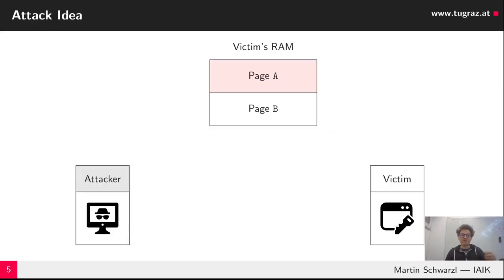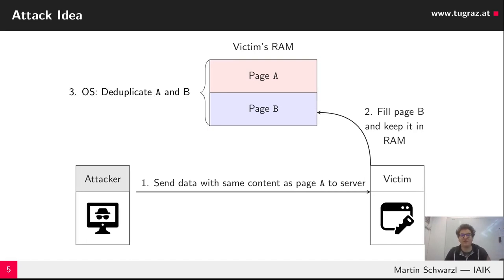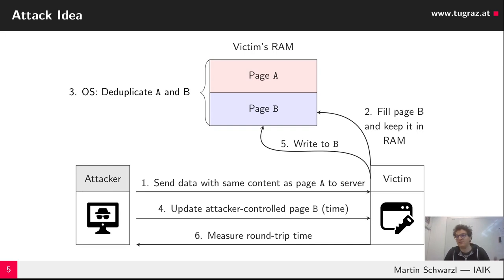How could this be exploited in a remote scenario? The attacker targets a remote server, first sending data with the same content as a guess to the server. The server application fills the RAM — this could be some in-memory cache — and then the OS deduplicates it. The attacker then performs an update operation via the API, triggering a page fault, and measures the round-trip time.